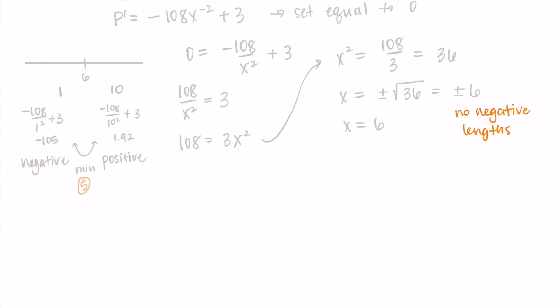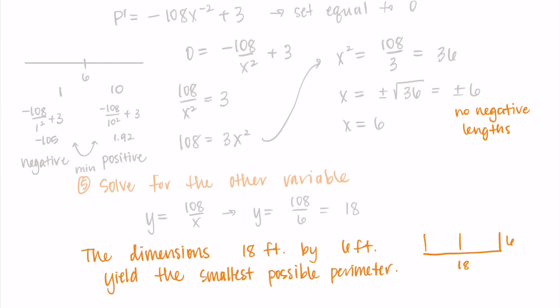So we know that x equals six corresponds to a minimum for our perimeter. We just need both dimensions since we need to know the dimensions of this chicken coop. So we need to solve for the other variable. We have one side that's six, we need the other length. So I know that y is equal to 108 over x, x is six. So I'm getting that y is equal to 18. This means that the dimensions of 18 feet by six feet yield the smallest possible perimeter for our chicken coop. And here six feet is that length that also matches the length of the divider.